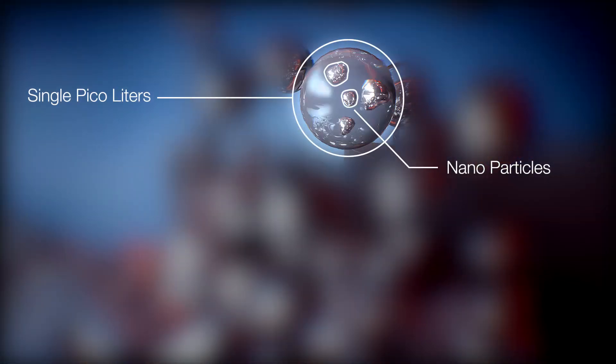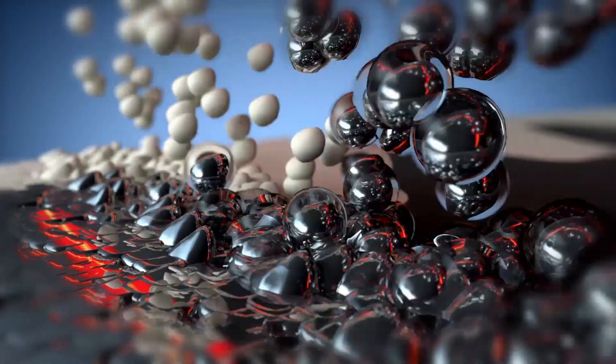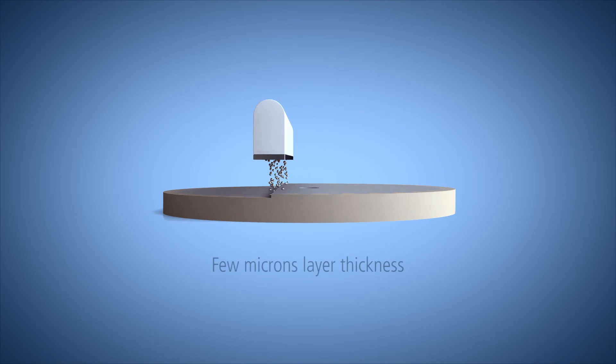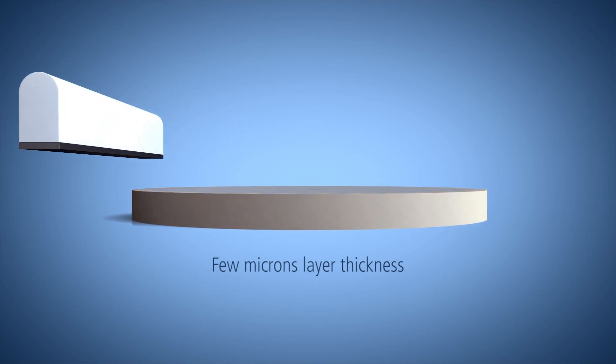The metal liquid formula and the support material are jetted from many thousands of printing nozzles simultaneously, in a process that's up to five times faster than laser metal printers.